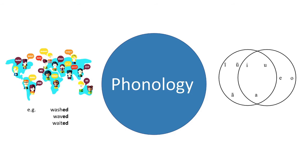An interesting example in English is that the suffix '-ed' is pronounced differently depending on the sounds that come before it. So we have 'washed,' 'waved,' and 'waited.' See if you can figure out the pattern.